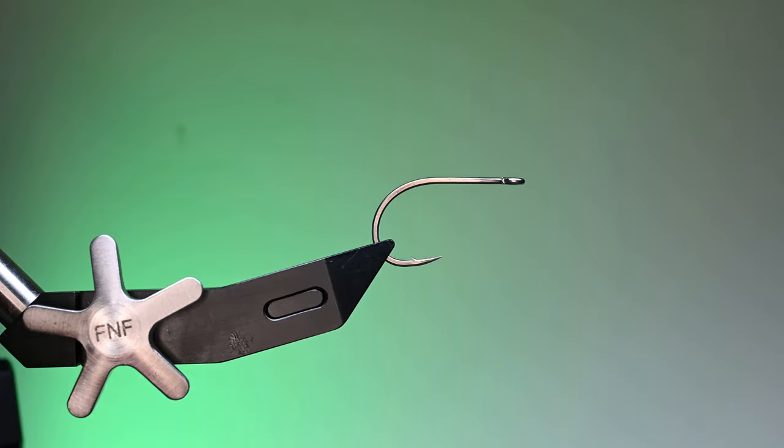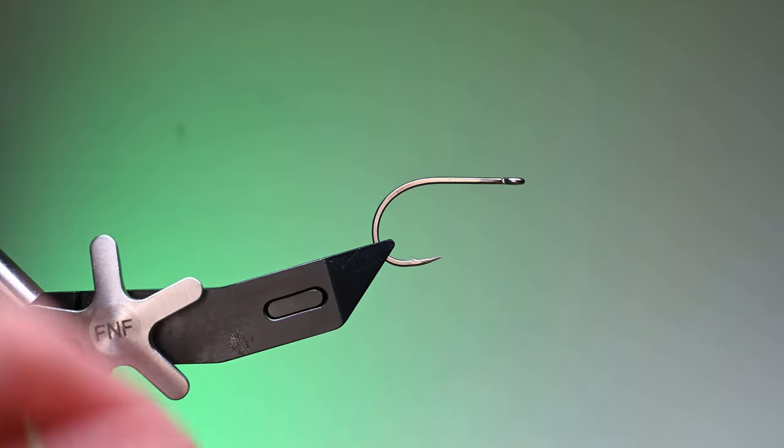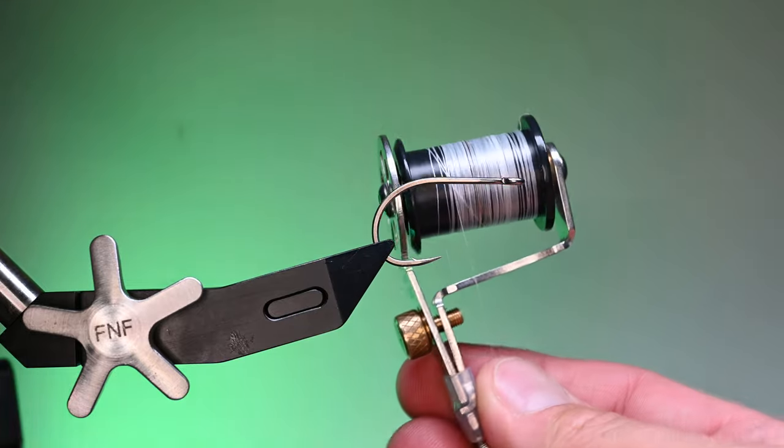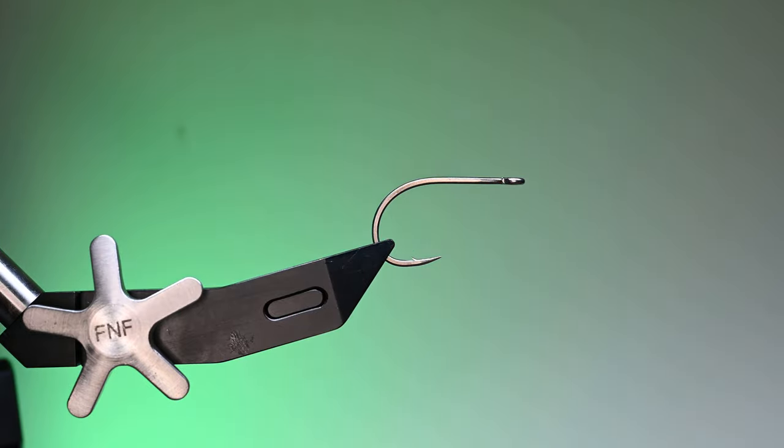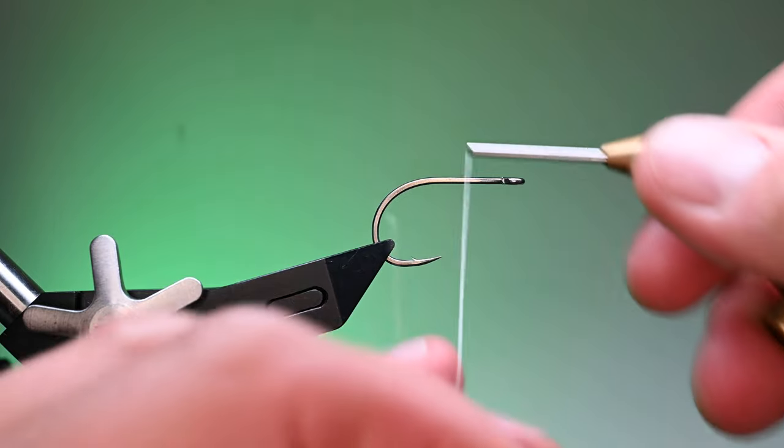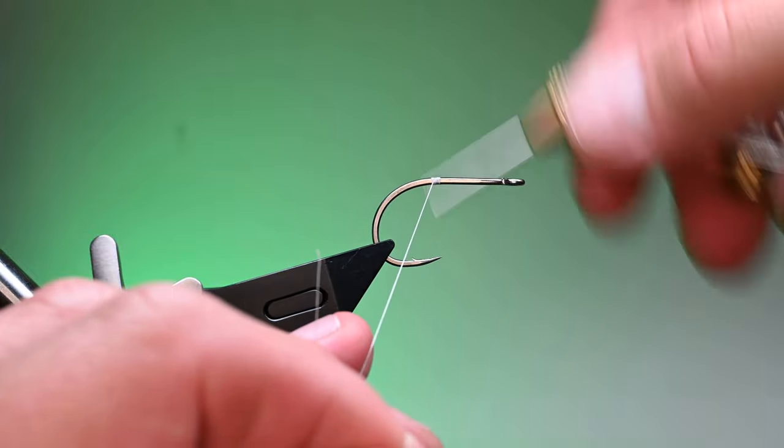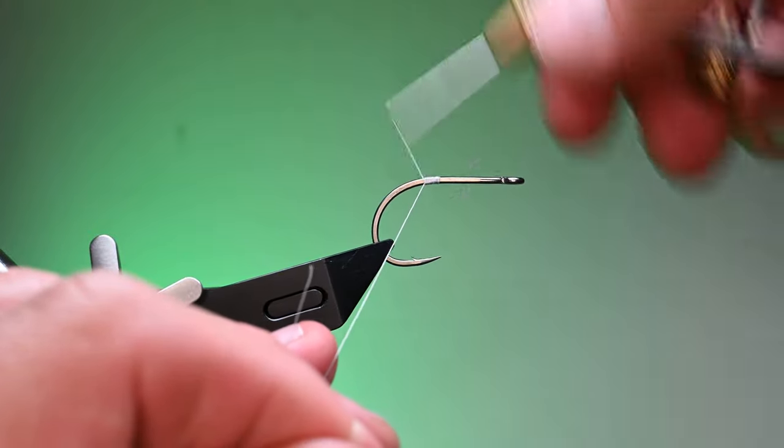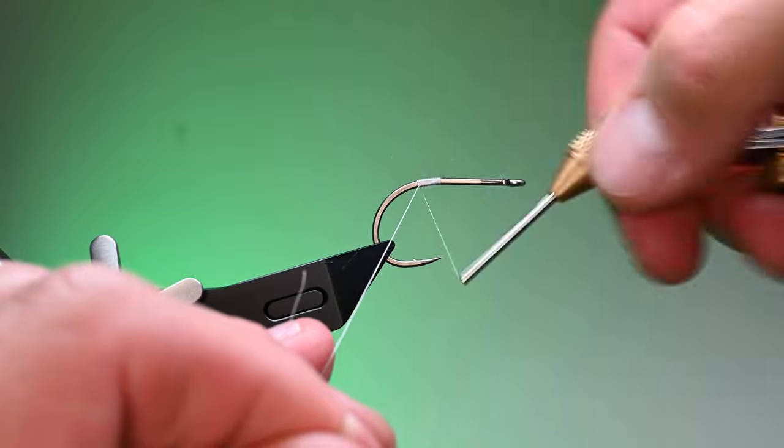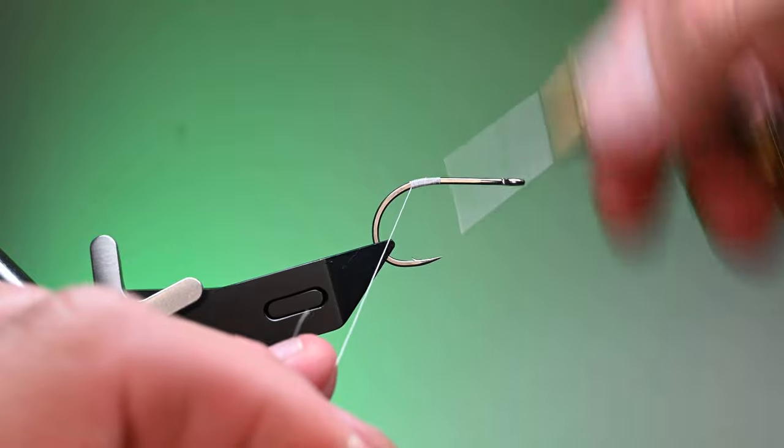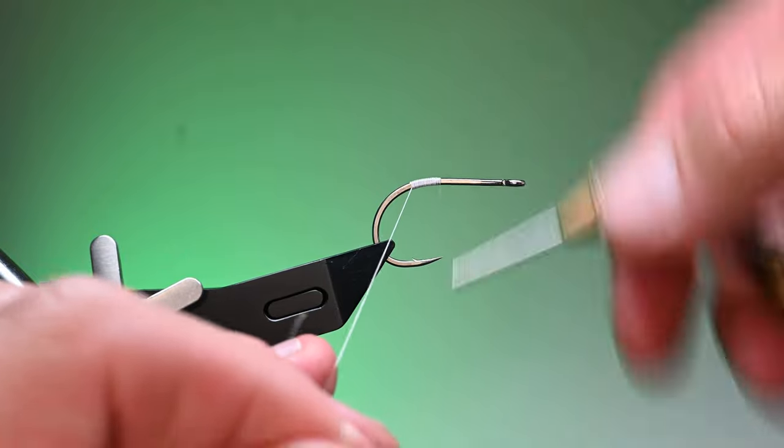This is a shorter shank hook than what the patterns I found online typically use, but we're going to be using a Semperfly 6-aught in white. This is a classic wax thread, and this is not a very complicated fly at all. I'm going to start my thread right here at the hook point, working my way back down. I'm going to put about a quarter of an inch of thread and then advance it back up to the hook point and trim out our tag end.